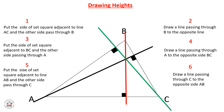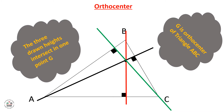These are the three heights for this triangle. The three drawn heights intersect in one point G, and this point is called the orthocenter of triangle ABC.